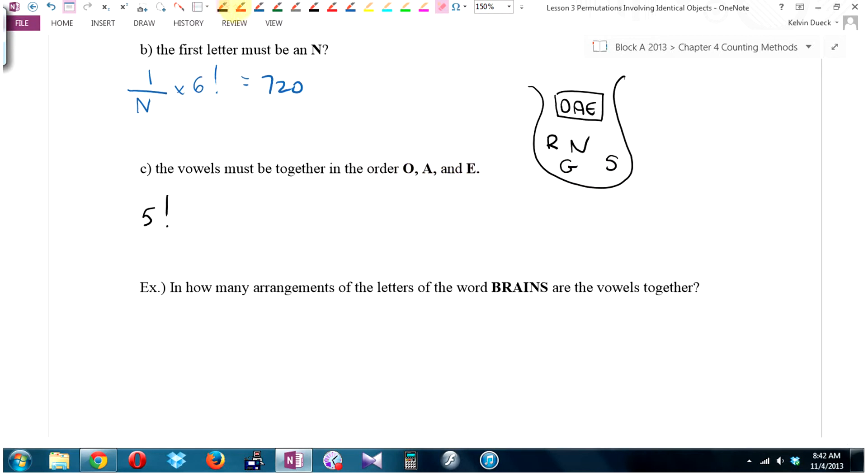We're going to add a part D right here. Part D: the vowels must be together in any order. See the difference? In C I said better be O-A-E. In D, any order you want. Anyone have a suggestion on how we can handle this one?